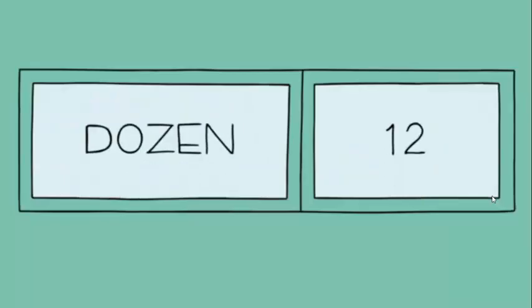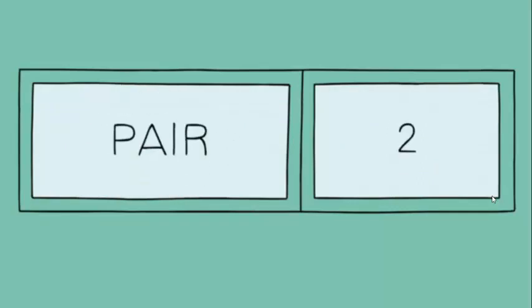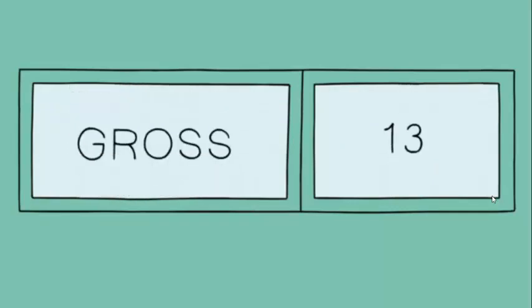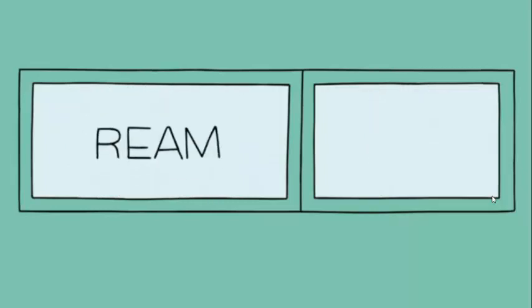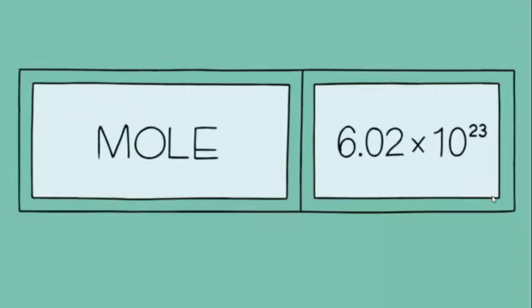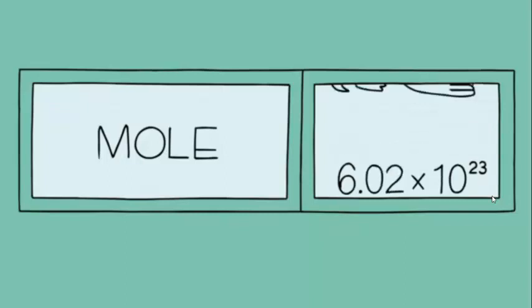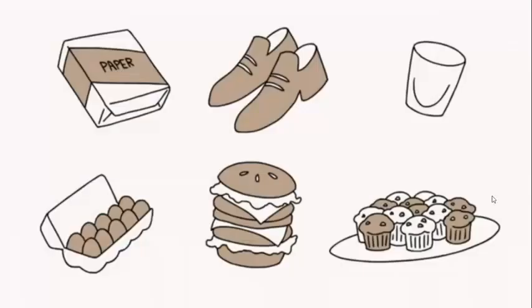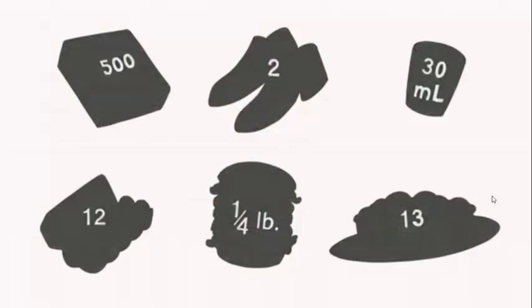When we hear the word dozen, we probably think of the number 12. We also know that a pair is 2, a baker's dozen is 13, a gross is 144, and a ream of paper is...anybody? A ream is 500. Well, a mole is really the same thing. For a chemist, a mole conjures up the number 6.02 times 10 to the 23rd. Not a fuzzy little animal. The only difference is that the other quantities are more familiar to us.